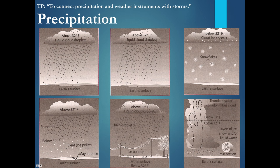Hail occurs with the cumulonimbus cloud, which is a very thick cloud from bottom to top with a transition in temperature. Where it's above 32 degrees Fahrenheit, water is in liquid form, and when it rises to below 32 degrees Fahrenheit, it changes into ice. It goes back and forth between liquid and ice, building up layers. If it cycles numerous times, you can have very large hailstones; if only once or twice, maybe the size of an eraser at the end of a number two pencil.